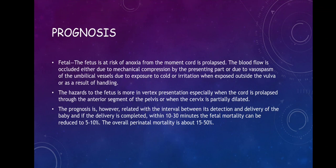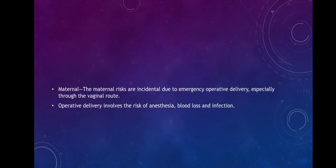The prognosis is related to the interval between detection and delivery of the baby. If delivery is completed within 10 to 30 minutes, fetal mortality can be reduced to 5 to 10 percent. The overall perinatal mortality is about 15 to 50 percent for cord prolapse. Maternal risks are incidental, due to emergency operative delivery especially through the vaginal route; operative delivery involves the risk of anaesthesia, blood loss, and infection.